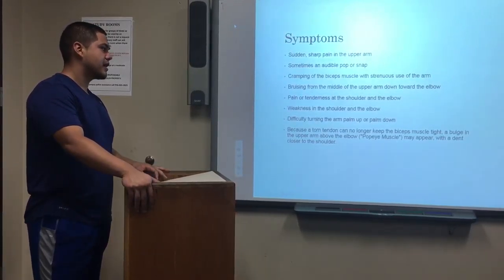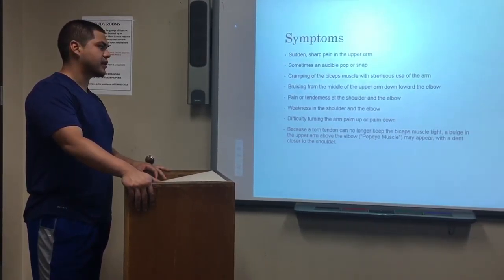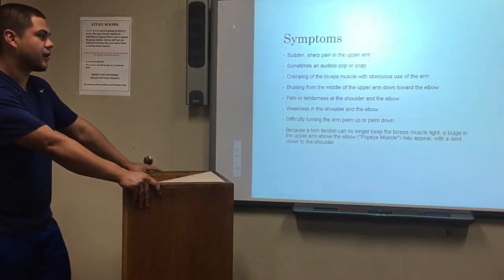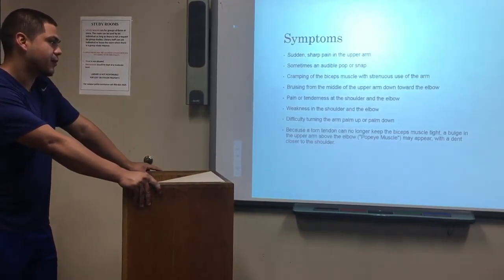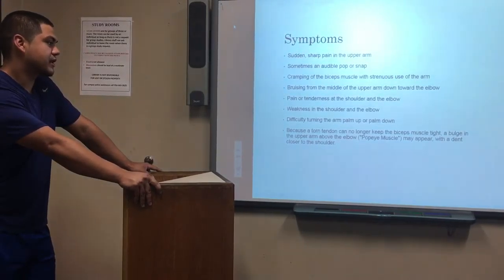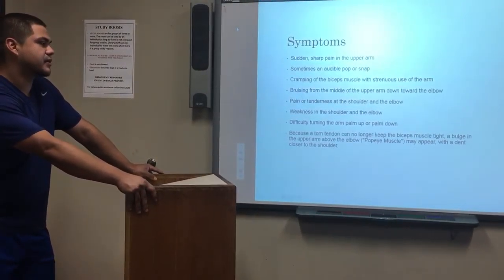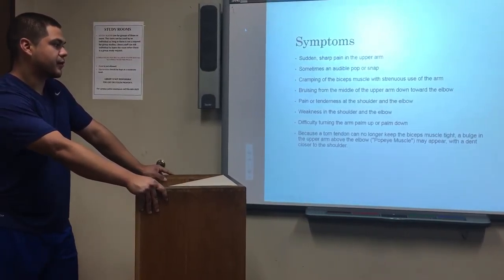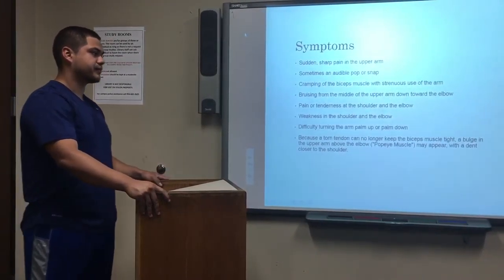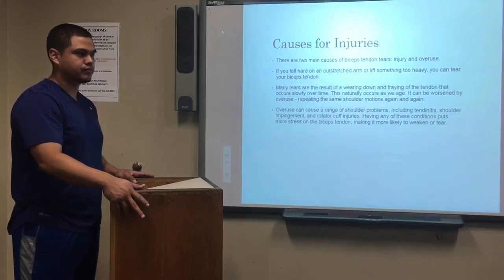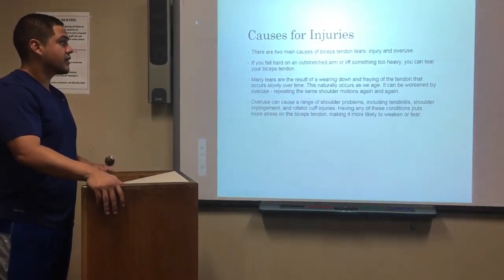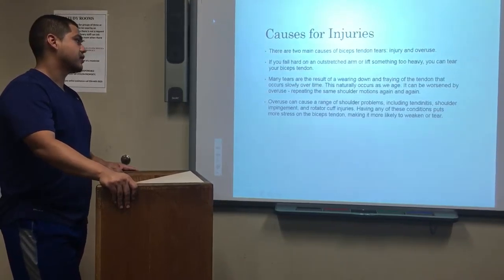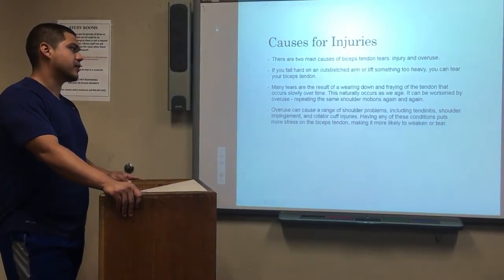Symptoms can include sudden sharp pain in the upper arm, sometimes an audible pop or snap, and cramping of the bicep muscle with strenuous use of the arm. Bruising from the middle of the upper arm toward the elbow, pain or tenderness at the shoulder and elbow, weakness in the shoulder and elbow, and difficulty turning the arm palm up or palm down. Because the torn tendon can no longer keep the bicep muscle tight, a bulge in the upper arm above the elbow may appear with a dent closer to the shoulder.